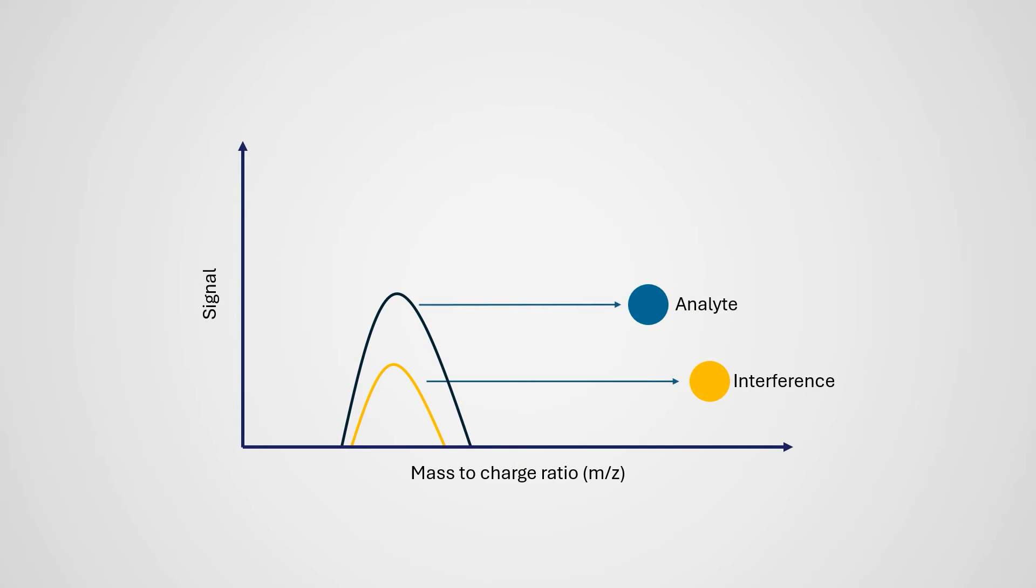This portion of the instrument can also be run as a reaction cell, which uses chemical reaction with hydrogen gas to add a proton to an analyte ion. This shifts its mass to charge ratio by one. That is often enough to separate your desired signal away from an interfering one.